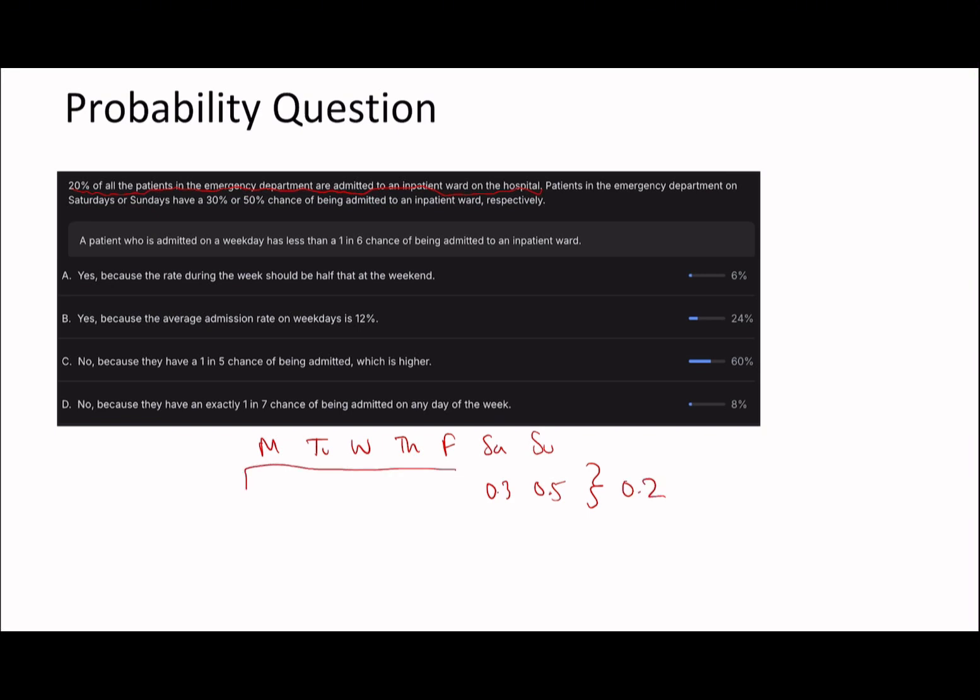Which means that all of these values added up together must add, and when you combine it with the 0.3 plus the 0.5, you divide it by 7, it must add up to 0.2. So you basically have to find the averages. So what you're looking for is 0.2 times 7, which is 1.4. And then you have to subtract the 0.3, subtract the 0.5, which will give us 0.8, so that's 0.6. So there's a 0.6 probability, therefore, of being admitted from Monday to Friday, but that's across five days.